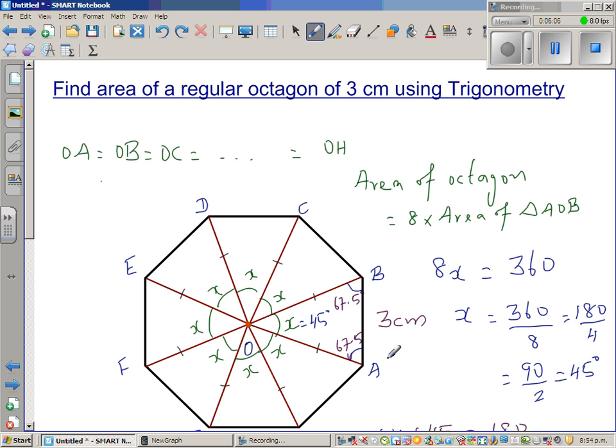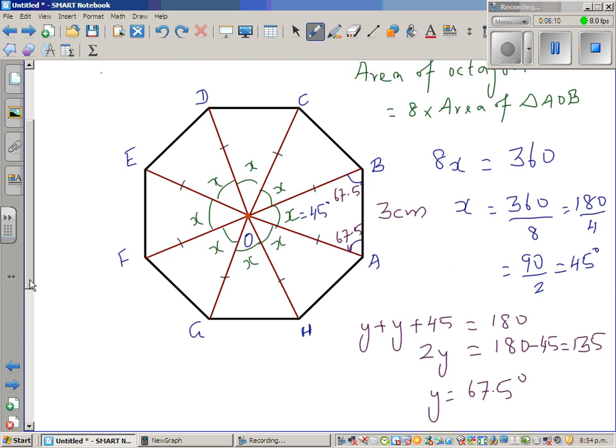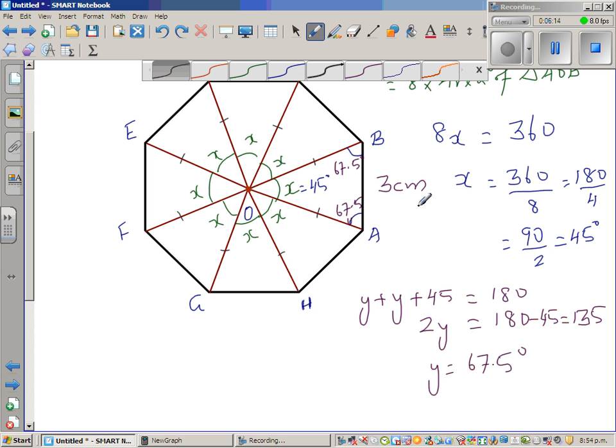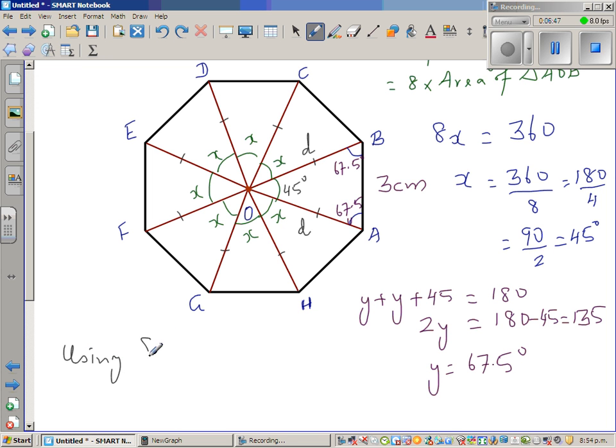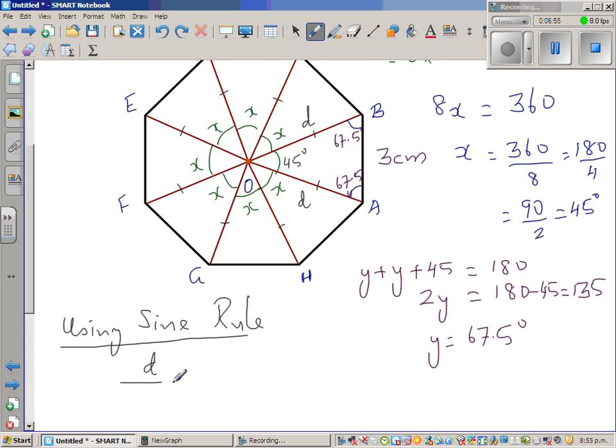You can use either sine rule or the cosine rule, but I like the sine rule to use here. So how can I write the sine rule? So I want to find, let me call OA, OA and OB both. If OB is D, this will also be D. Each of them are D. So can I say, this is 45. So let me remove X there so that you can see. We're dealing with, this is 45 degrees. So can I say, using sine rule, using sine rule, what can I say? Using sine rule, I'll start with D. D over sine of the opposite angle of sine 67.5 is equal to 3 over sine 45.